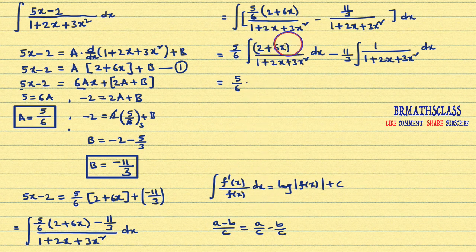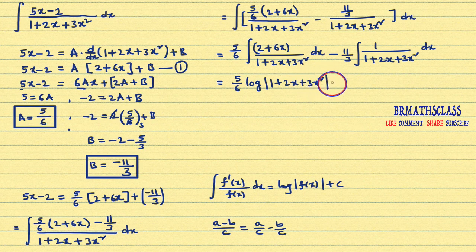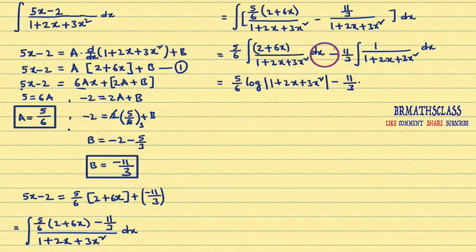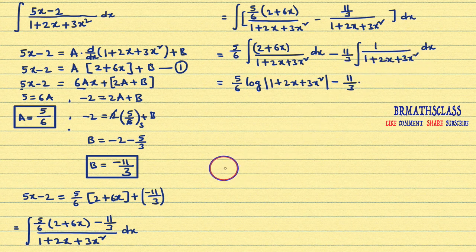Since the numerator is the derivative of the denominator, we can write its answer directly as log|1 plus 2x plus 3x²|. Minus (11/3) into — we now need to integrate 1/(1 plus 2x plus 3x²) dx. This integral is of the form 1/(ax² plus bx plus c) dx. I did around 20 such problems in class numbers 70 to 90. The expression here is 1 plus 2x plus 3x².